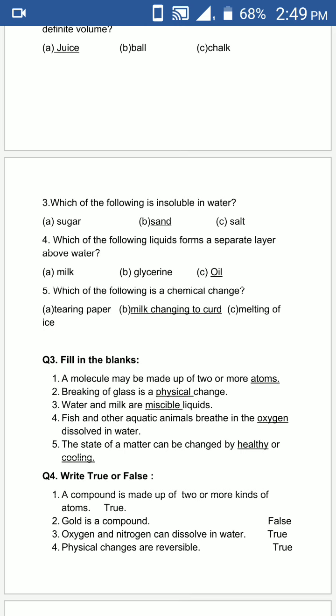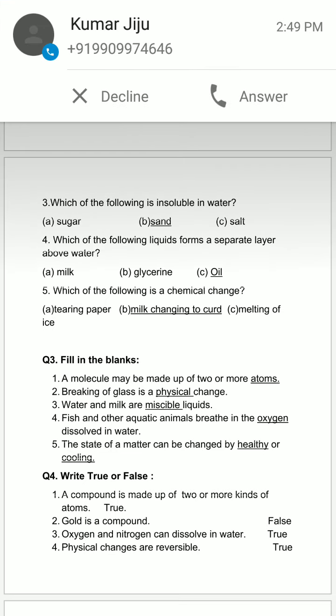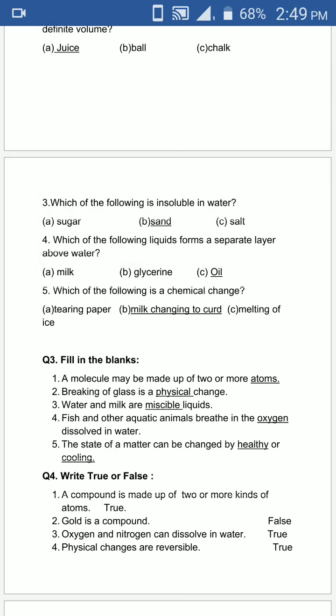Fourth is which of the following liquids forms a separate layer above water? Kaun sa aisa liquid hai jo separate layer banata hai water ke upar? The answer is oil. Oil forms a separate layer above water. Agar aap water dalo, uske upar oil dalo, to ek separate layer ban jayega. Water ke upar banayega layer oil ka.